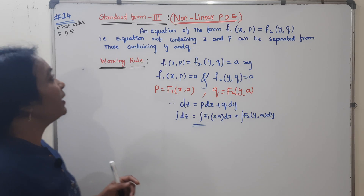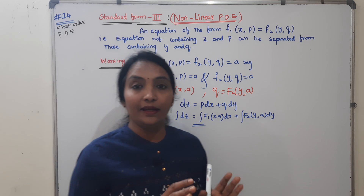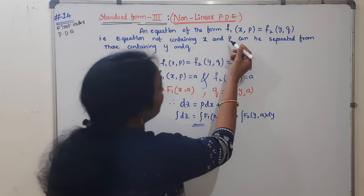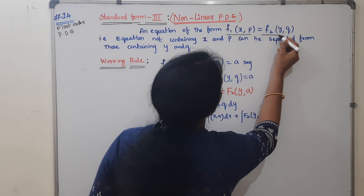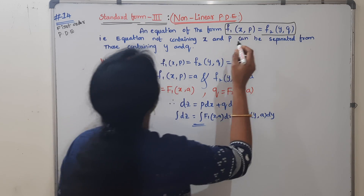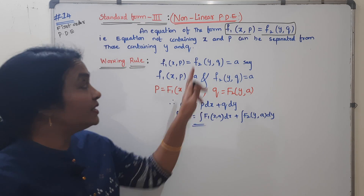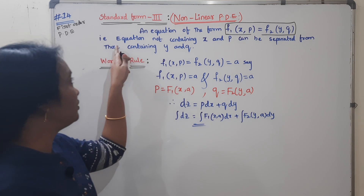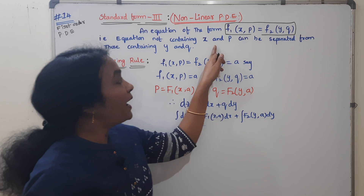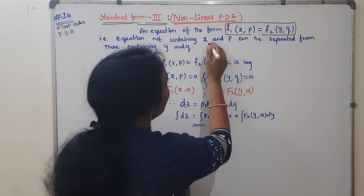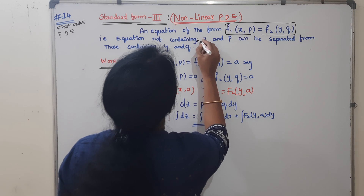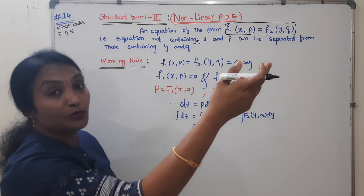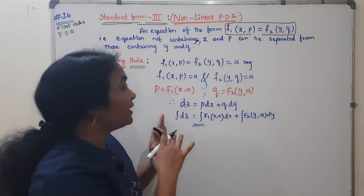The standard form separates the variables — we can separate them. An equation of the form F1(X, P) equal to F2(Y, Q). This is in the form of F1 in terms of X, P, Y, Q. There is no Z term — it is not containing Z. X, P can be separated from Y and Q terms. That is Standard Form 3.